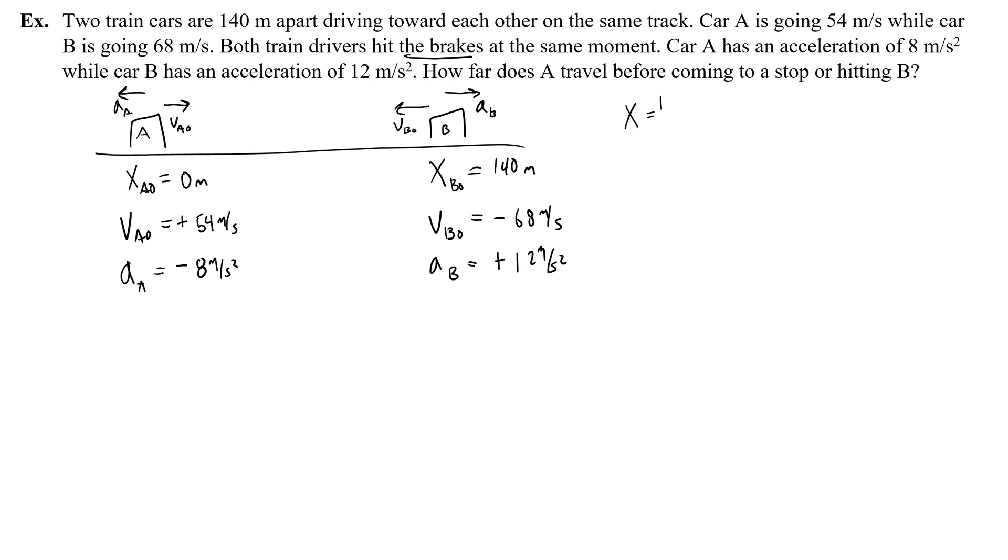Okay, so I did the hard part. I wrote down all of these variables. Now what I'm going to do is I'm going to take this general form of half the acceleration times time squared, plus the initial velocity times time, plus the initial position. And I'm going to write a graphable, math-friendly equation for car A and car B. So for A, half of the acceleration is negative 4, so negative 4t squared. The initial velocity is a positive 54, so plus 54t. And the initial position is 0, so I don't need to add anything else.